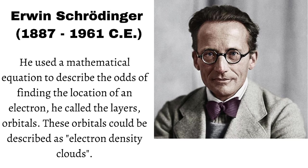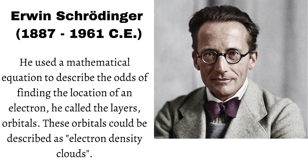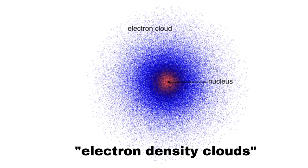Erwin Schrödinger built upon the quantum mechanical model. He used a mathematical equation to describe the odds of finding the location of an electron. He called the layers 'orbitals,' which could be described as electron density clouds.